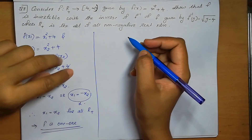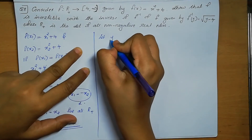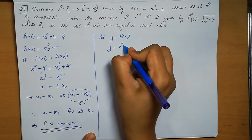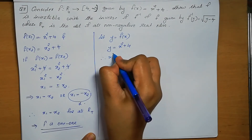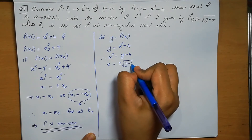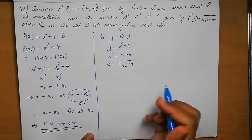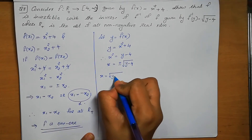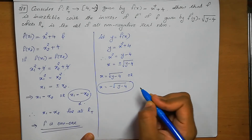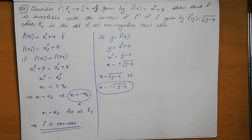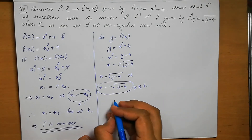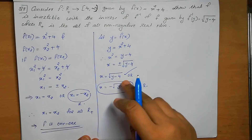Next we need to check for onto. Let y = f(x), so y = x² + 4. From there x² = y - 4, so x = ±√(y-4). Again no need to take the negative root because x belongs to positive real numbers only. Therefore x = √(y-4) is the only value we need to consider.